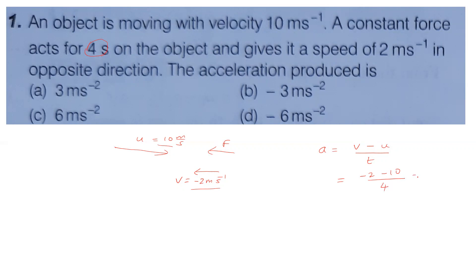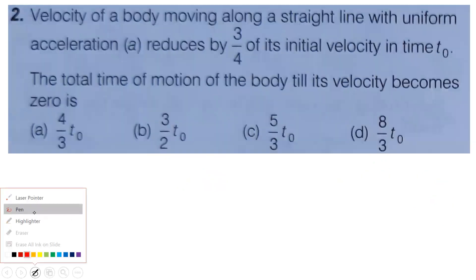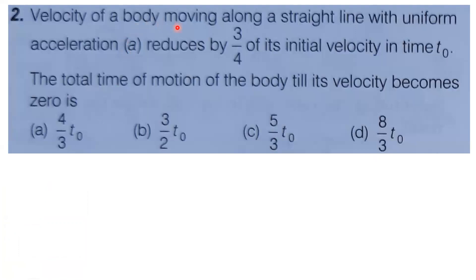So acceleration equals minus 2 minus 10 divided by 4, which gives minus 12 divided by 4, equals minus 3 meter per second square. So acceleration is minus 3 meter per second square, indicating retardation. First problem done.